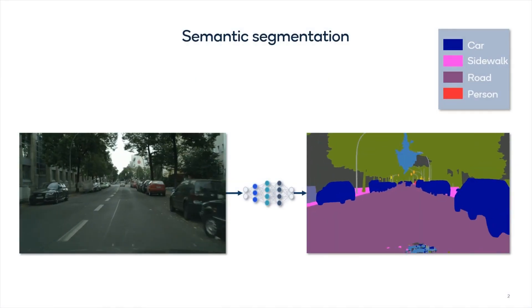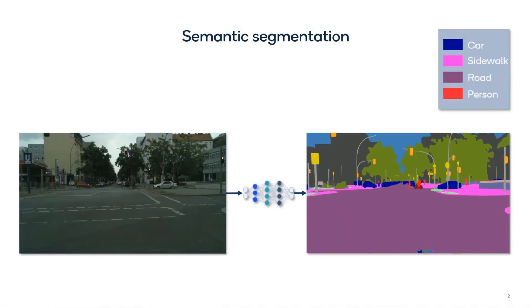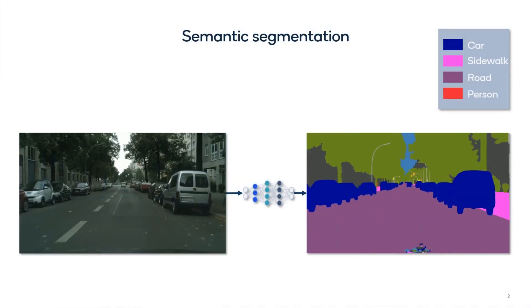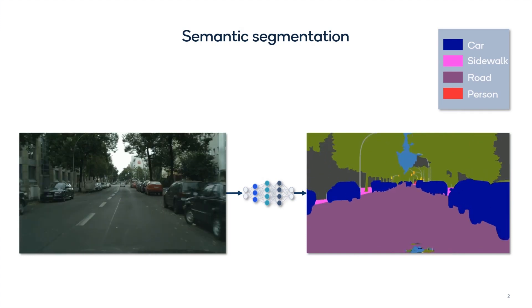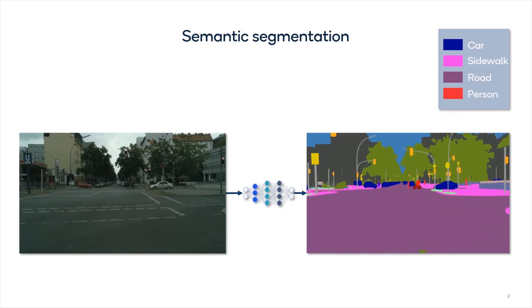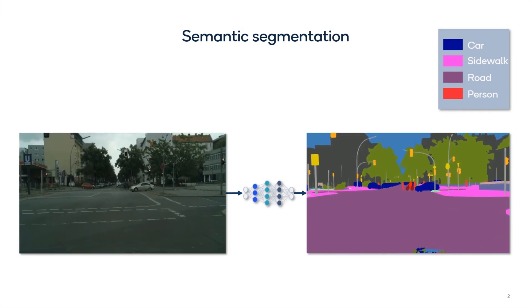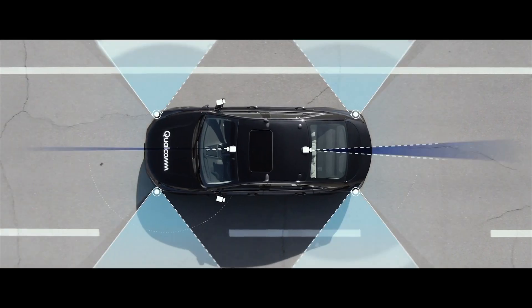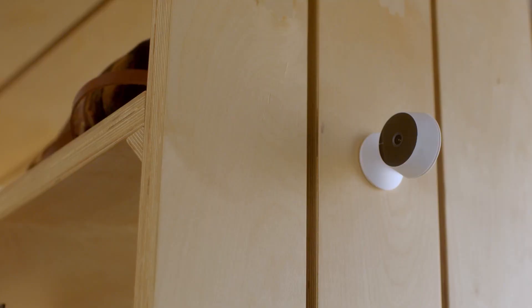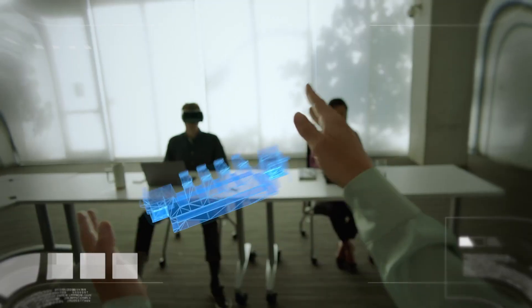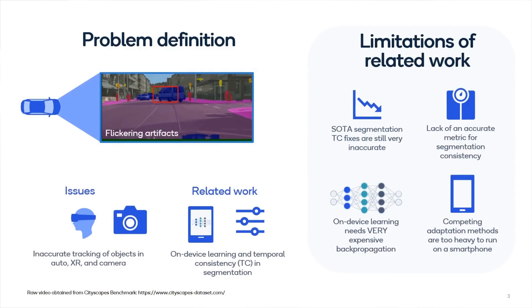Semantic segmentation is a popular computer vision task that assigns every pixel of an image to a label. It enables many emerging use cases, including autonomous driving, smart cameras, and XR applications.